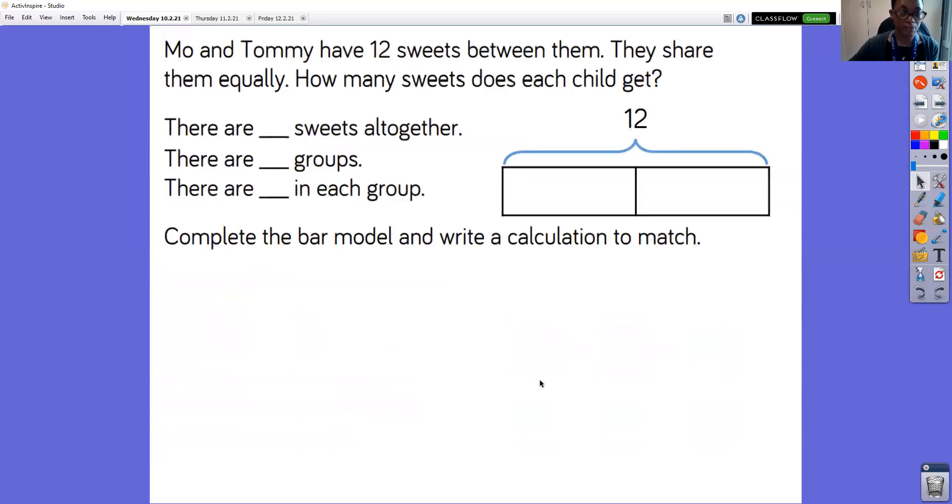Next, move on to this activity. Mo and Tommy have 12 sweets between them. They share them equally. How many sweets does each child get? There are sweets altogether. There are groups. There are in each group.